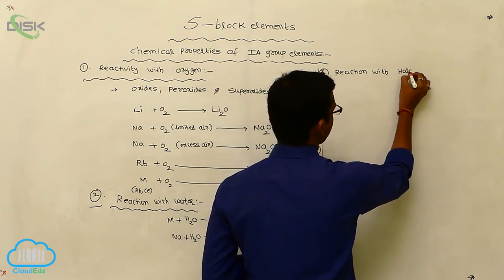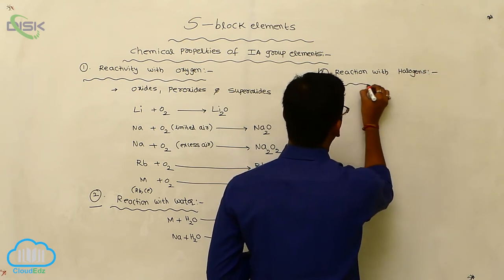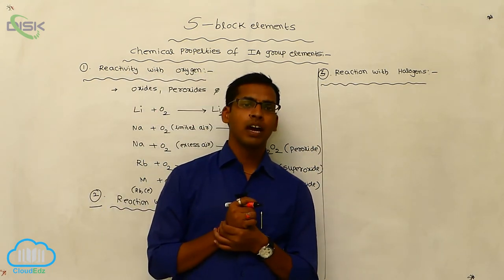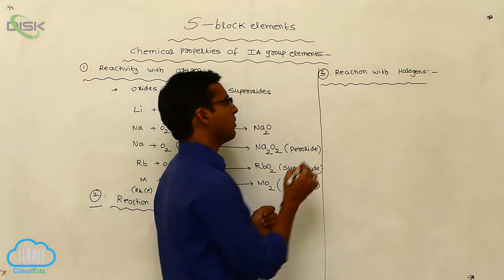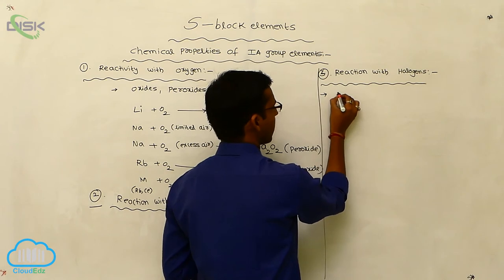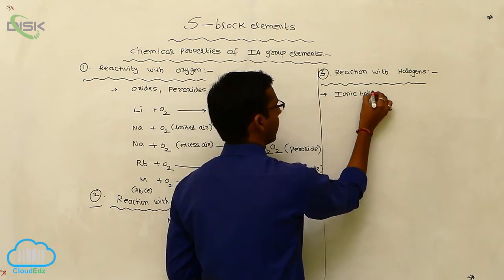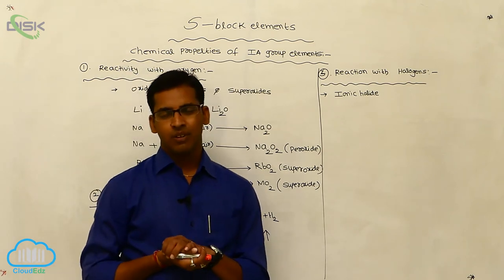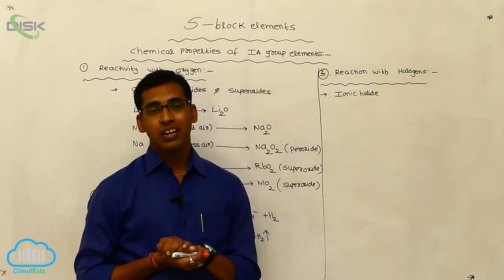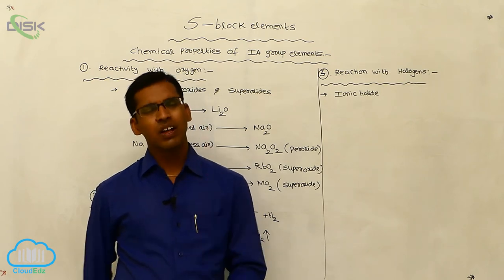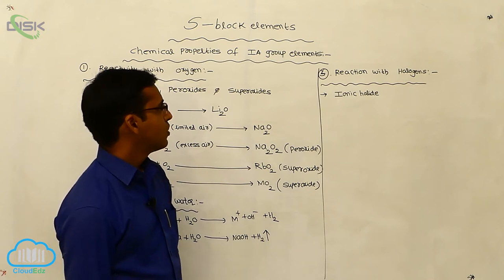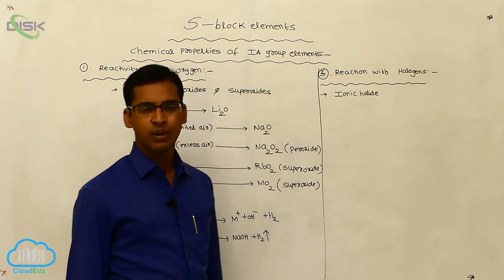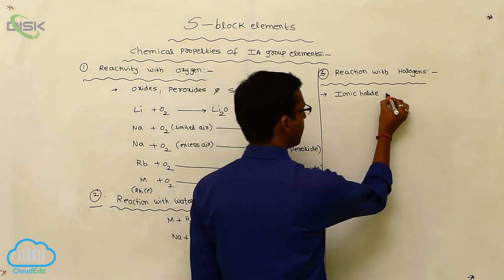The third property is reaction with halogens. Metals react with halogens to produce metallic halides. Generally, most of the first group elements form ionic halides — for example, sodium chloride, potassium chloride, rubidium chloride. Most halides are ionic halides, and ionic halides are easily soluble in water. For example, sodium chloride is easily soluble in water.